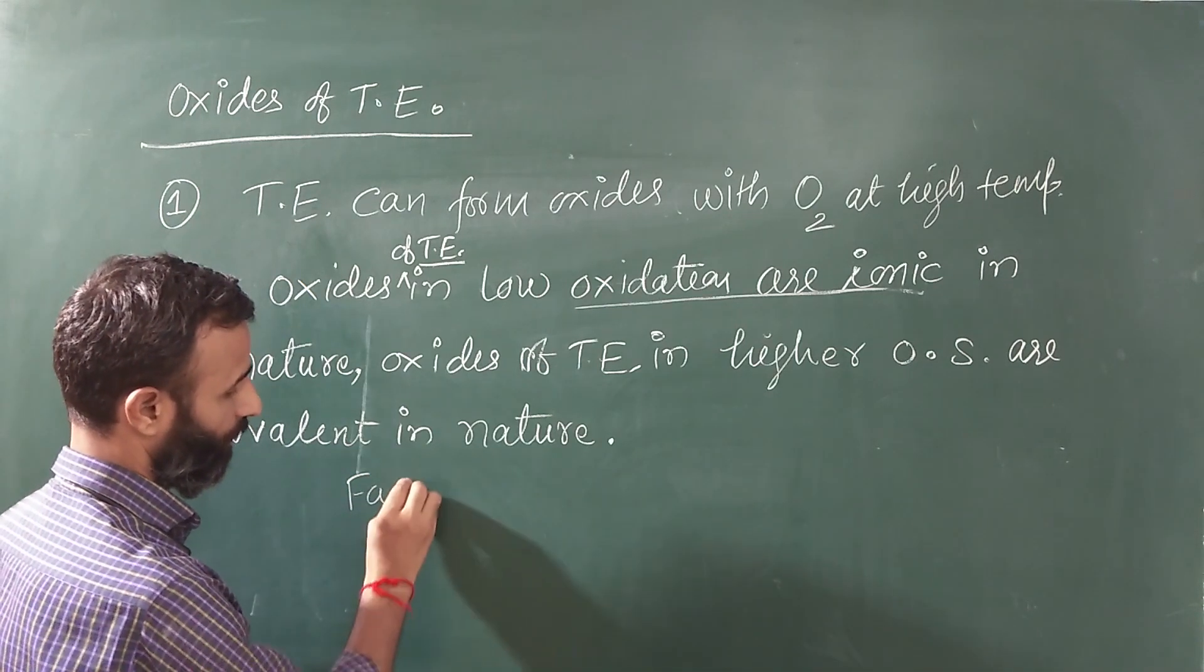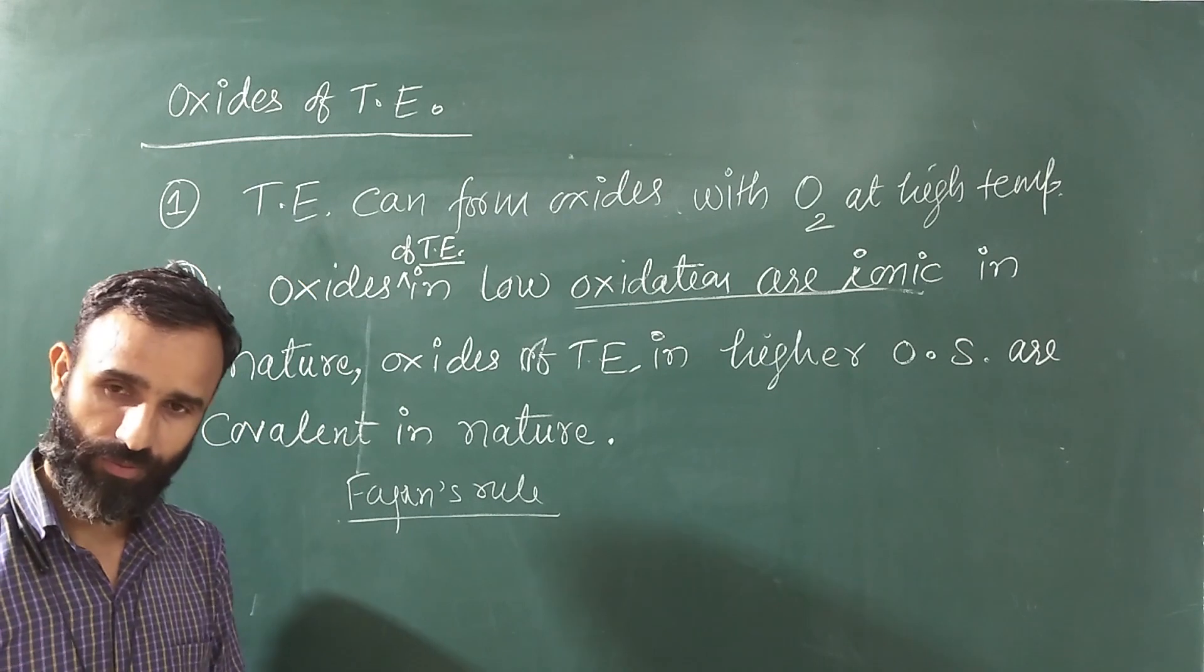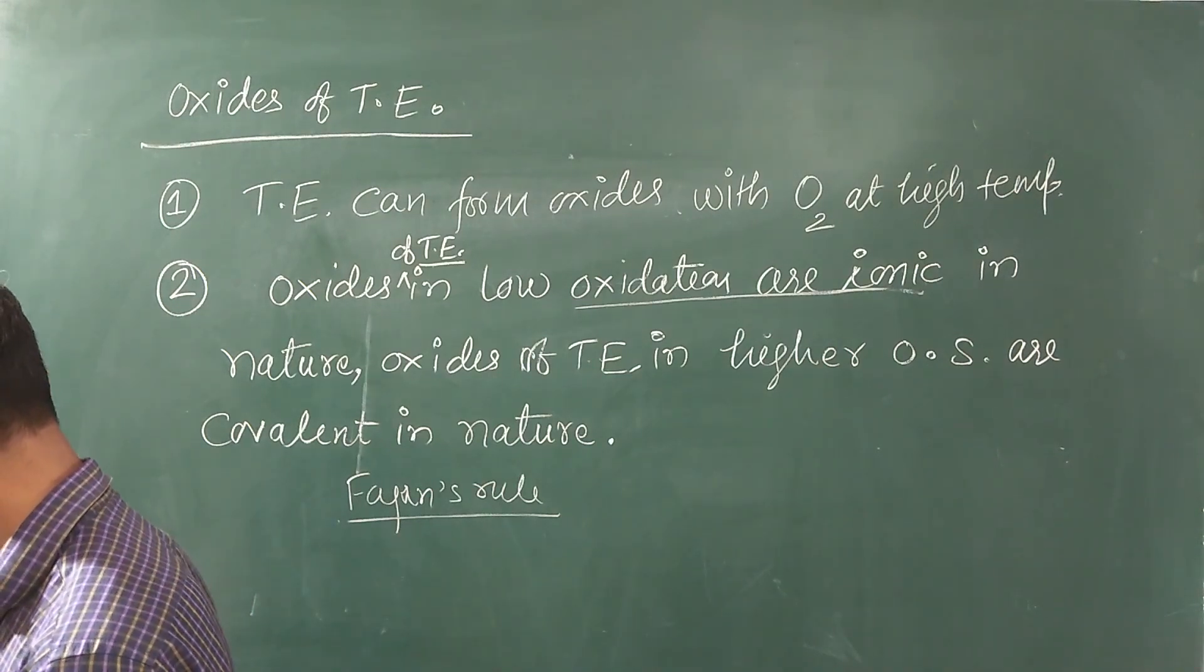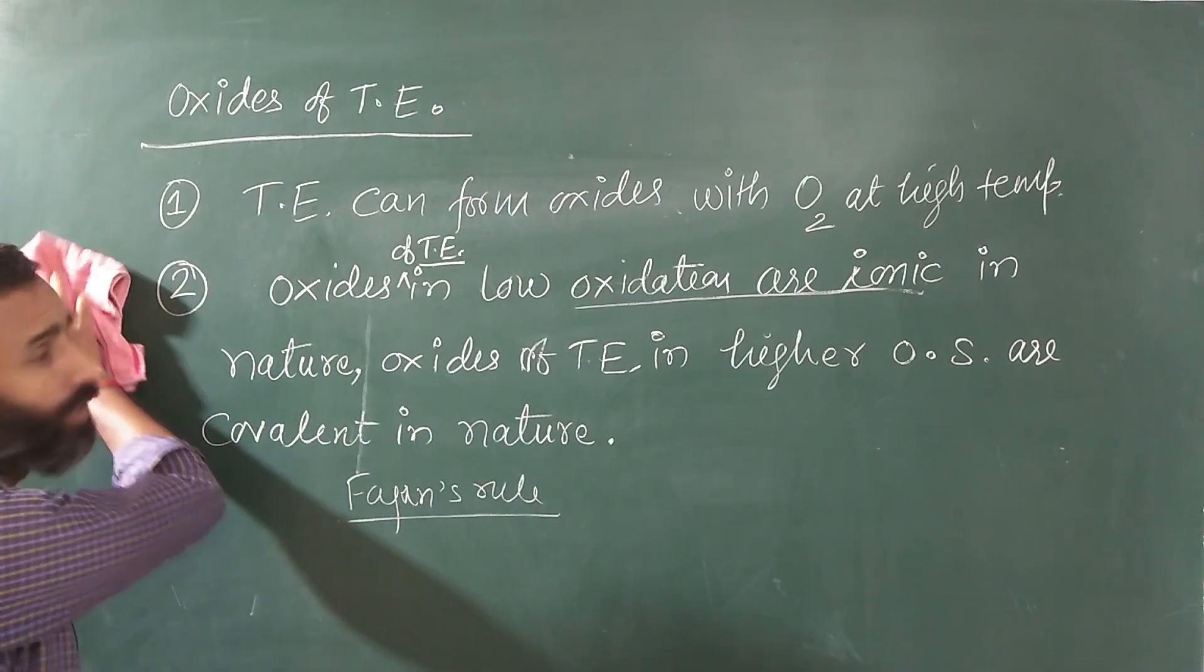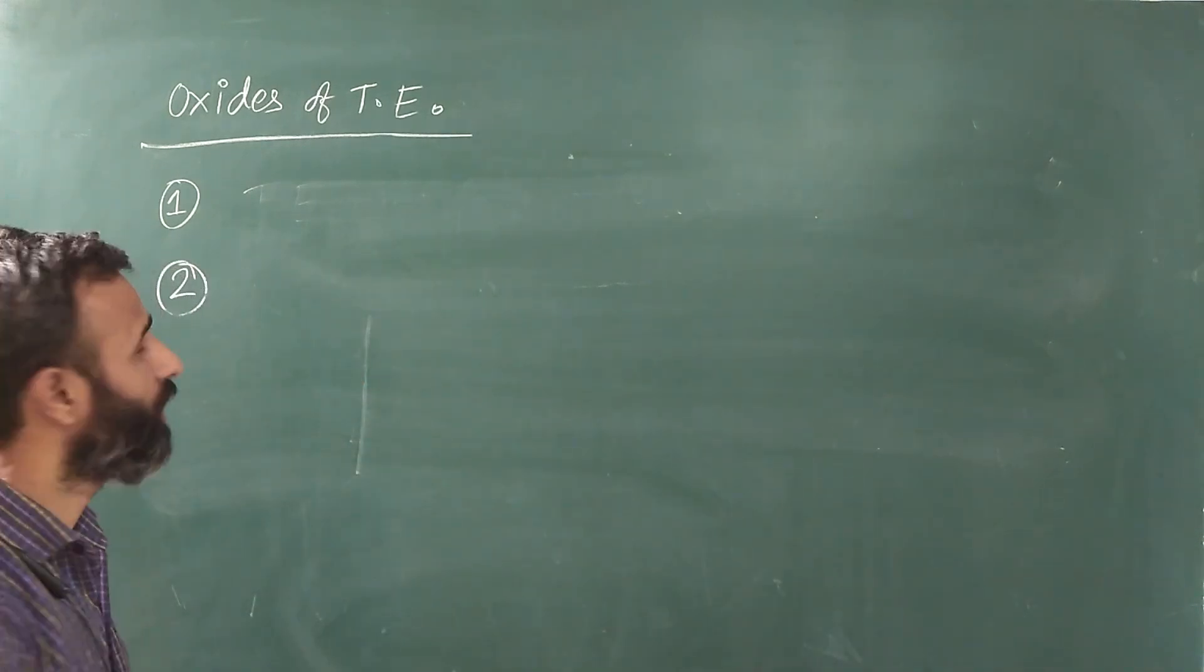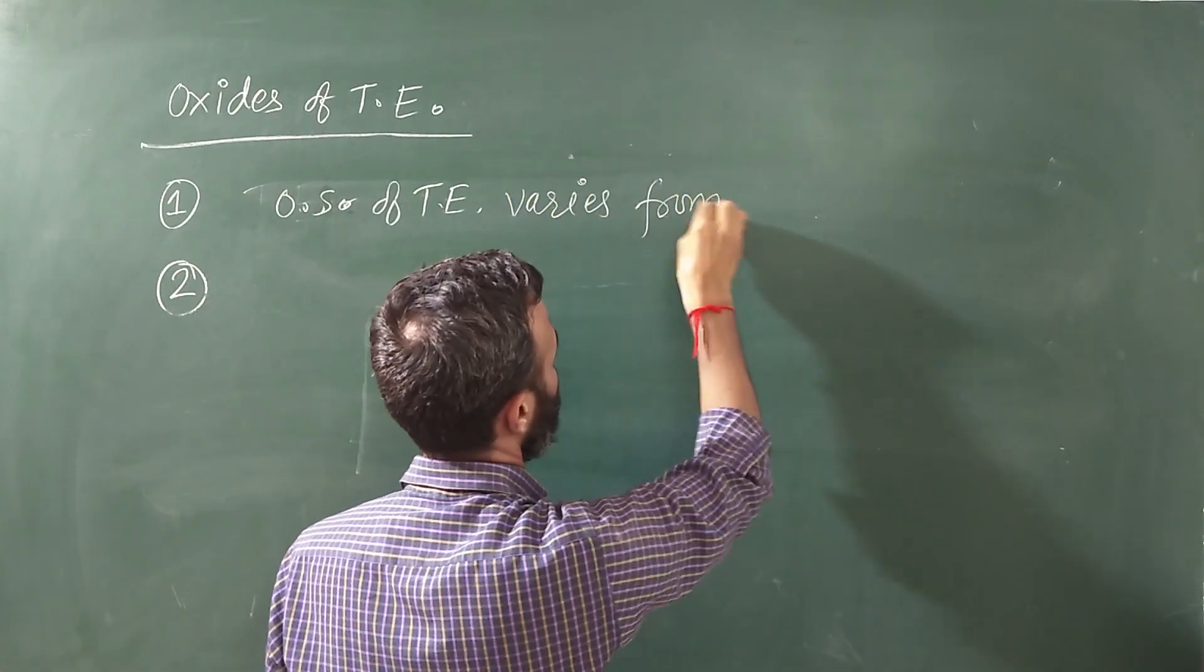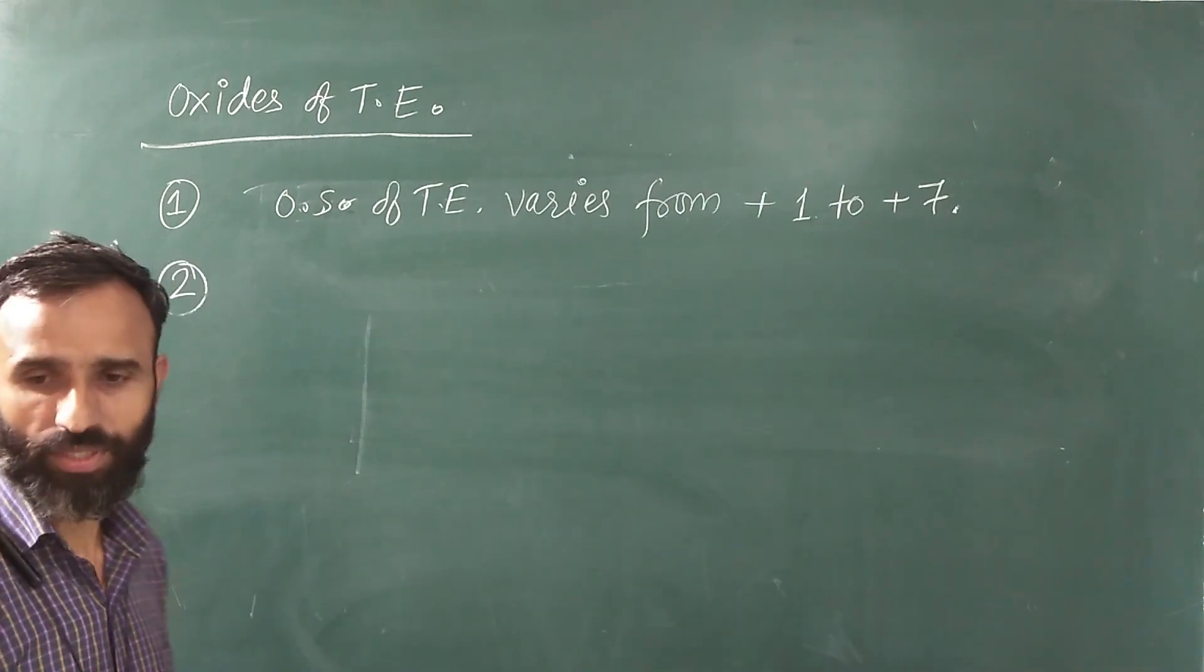Higher charge favors covalent character. The oxidation state of transition elements varies from +1 to +7, from +1 up to +7.